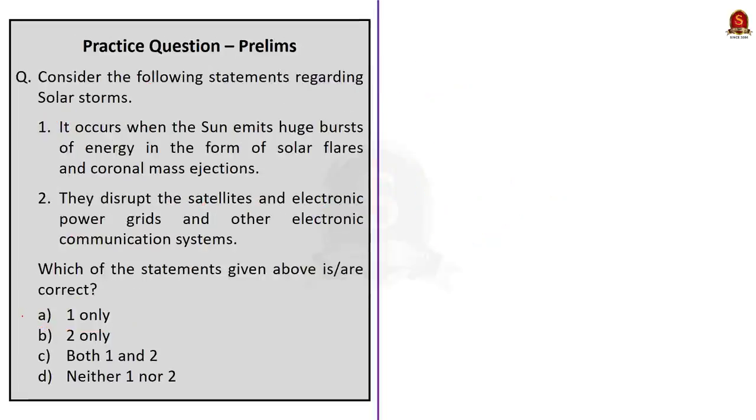Now, moving on to the third question. This question is about solar storm. Here also two statements are given. We have to find the correct statements. Now, let us get through the statements. The first statement is, it occurs when sun emits huge bursts of energy in the form of solar flares and coronal mass ejection. Now, moving on to the second statement. They disrupt the satellite and electric power grids and other electric communication systems. Here both the statements are correct because we saw them in our discussion. The first statement indicates the definition of solar storms and the second statement indicates the effects of solar storms. Since here both the statements are correct, the correct answer here is both 1 and 2.